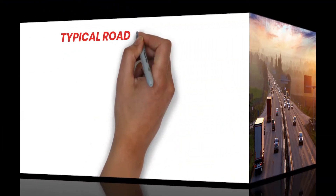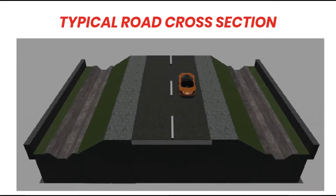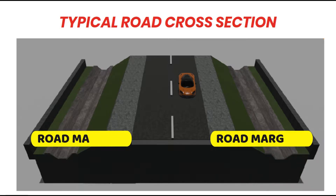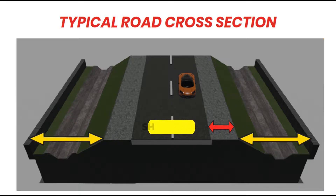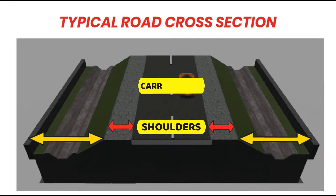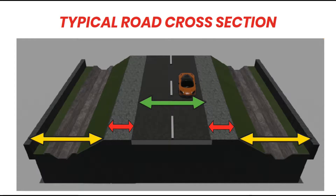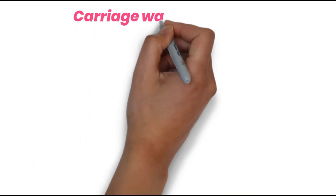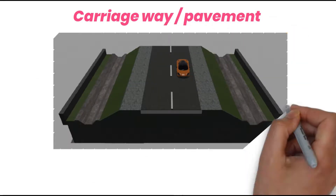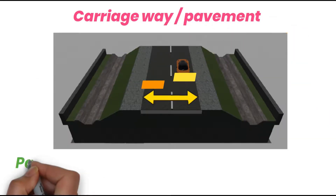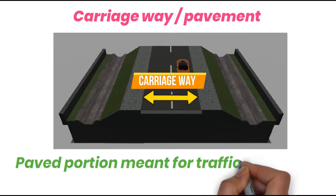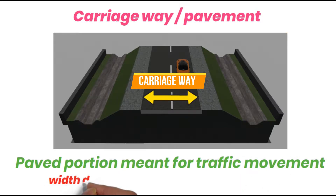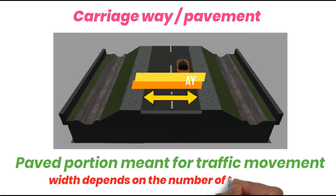Let us go through a typical road cross-section. This is a typical road cross-section. These are the road margins which include the shoulders, and this particular area is the carriageway. First, we will discuss about the carriageway or pavement. This particular portion is the carriageway or pavement — it is basically the paved portion meant for traffic movement. The traffic carriageway width depends on the number of lanes.